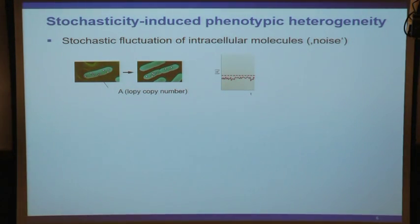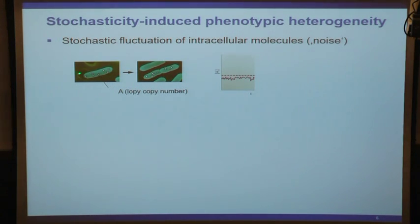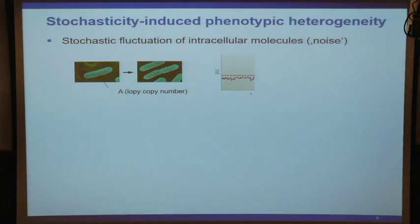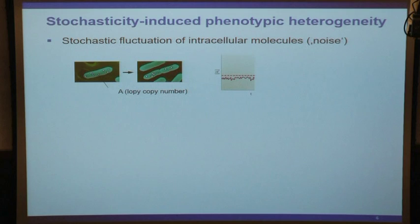For example, if this is an E. coli cell with eight copies of a regulator, and these eight copies diffuse in the cell driven by Brownian motion - when this cell divides, it's not unlikely that one daughter gets just three copies and the other gets five. If you follow the copy numbers of such a cell as a function of time, you would see them tremendously fluctuating. This is molecular noise, driven by Brownian motion and low copy number of molecules.